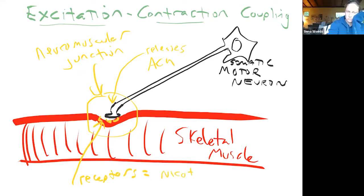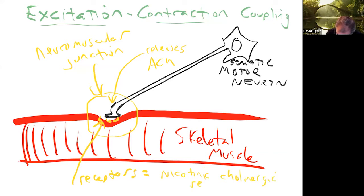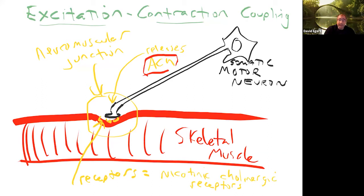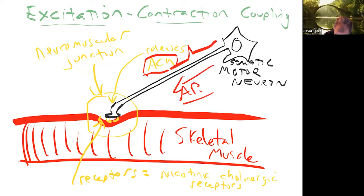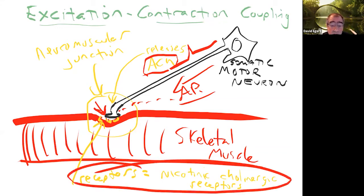What neurotransmitter is released by the somatic motor neuron? Acetylcholine — it always releases acetylcholine. What kind of receptors are on the skeletal muscle? Nicotinic — not adrenergic. They're cholinergic. Cholinergic is the adjective meaning relating to acetylcholine, and they're always excitatory. Once we release acetylcholine in the neuromuscular junction, the receptors bind acetylcholine, which is going to depolarize the sarcolemma.